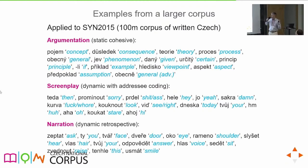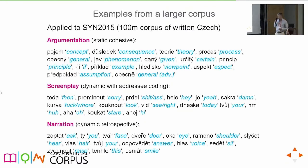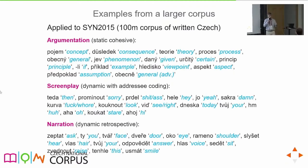For screenplay — a dynamic register with a lot of addressee coding mimicking spoken conversation — the most associated words include: 'sorry', 'shit', 'hey', 'yeah', 'damn', that word, 'look', 'see', 'today', 'you're', 'huh', 'oh', 'stare', 'hi'. I think that's pretty good for automatic methods with just a few minutes of playing with numbers. For narration, the most associated words include: 'ask', 'face', 'door', 'eye', 'shoulder', 'hear', 'hair', 'voice', 'sit', 'smile'. I realize that 'smile' is something you would not expect in journals or non-fiction — that's something you'd expect from a fictional text, from narration.